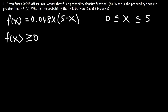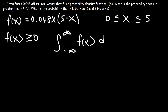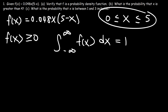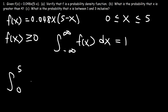How can we verify that f is a probability density function? The integral from negative infinity to infinity of any probability density function must equal 1 by definition. Since x has to be between 0 and 5, the integral from 0 to 5 of f of x dx must also equal 1. So this is what we need to verify.